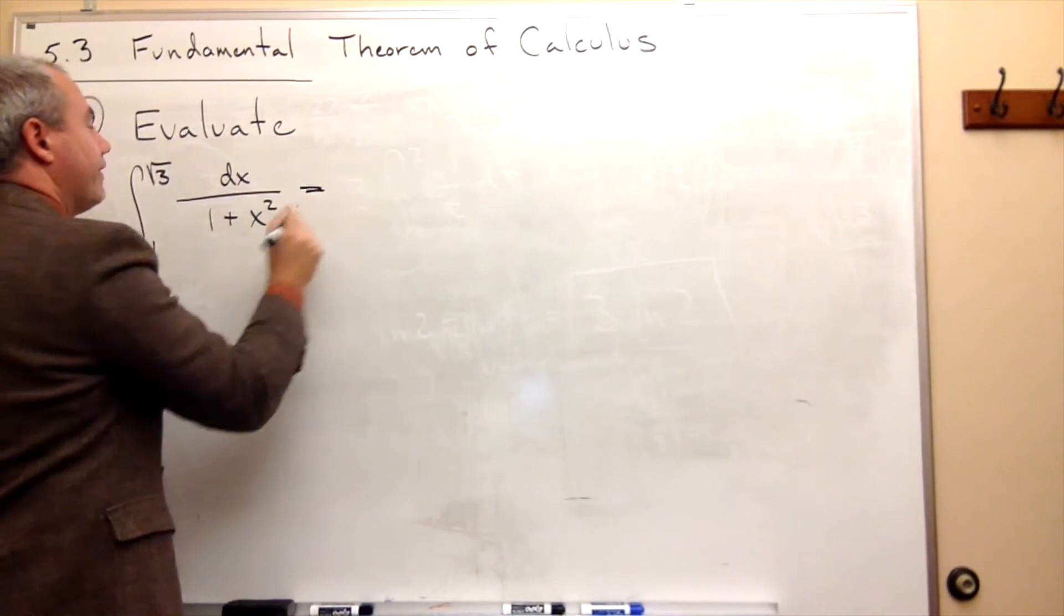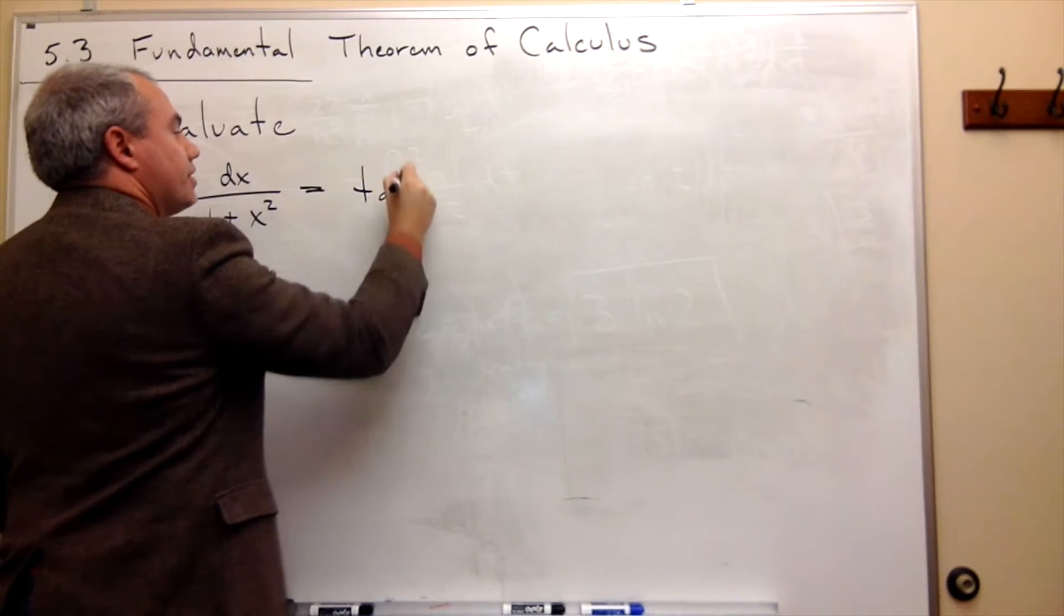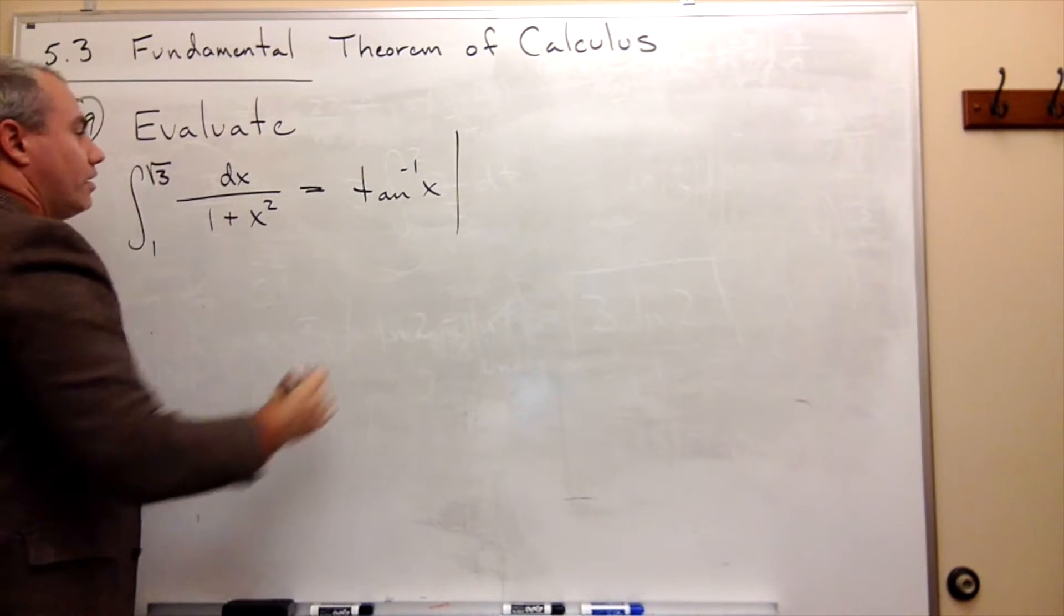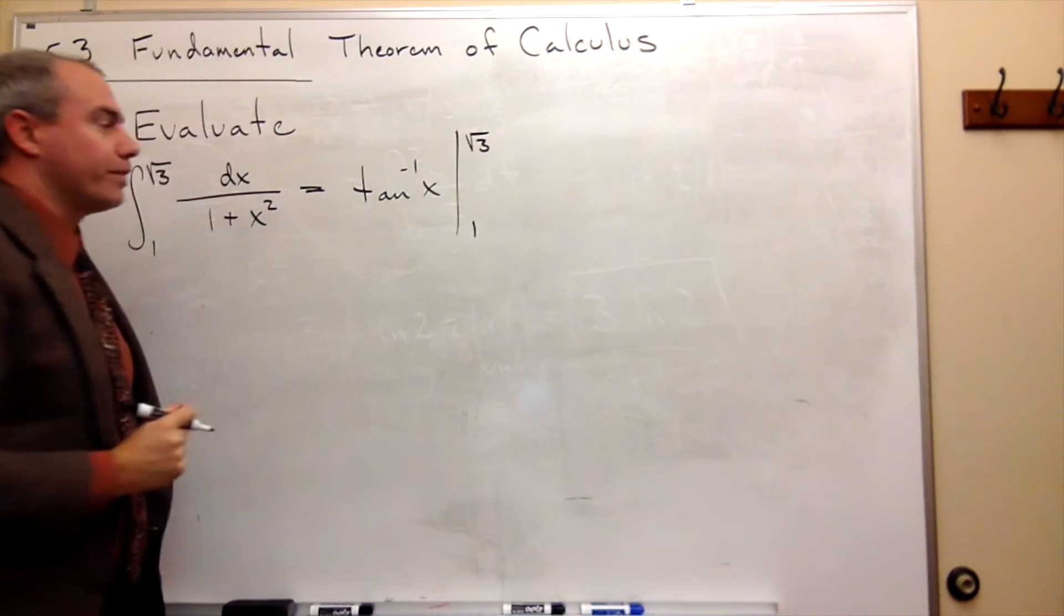And so the antiderivative of 1 over 1 plus x squared, we know that's tangent inverse of x. And we want to evaluate that from 1 to the square root of 3.